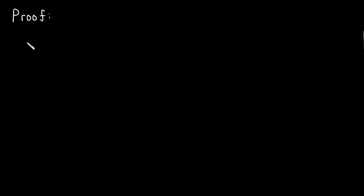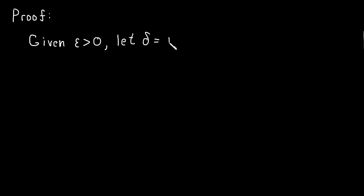Proof. Given epsilon greater than zero — so any epsilon, there's nothing special about this one, so if it works for this one it should work for all of them — let delta equal the minimum of one and epsilon over five. If one is smaller than epsilon over five, then delta will be one. If epsilon over five is smaller than one, then delta will be equal to epsilon over five. Just take the smaller of the two values.